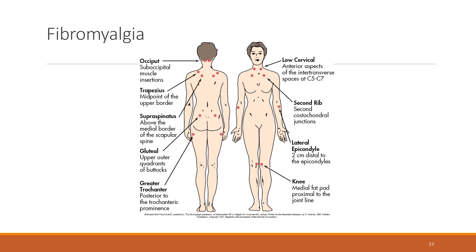If diagnosed correctly, fibromyalgia should be diagnosed based on a pressure-point diagram — pain should be symmetrical and present in most of the listed pressure points. In reality, chart reviews often show no evidence that this examination was even carried out, with patients diagnosed based on history and presentation alone, without the pressure-point examination — which is certainly inappropriate.